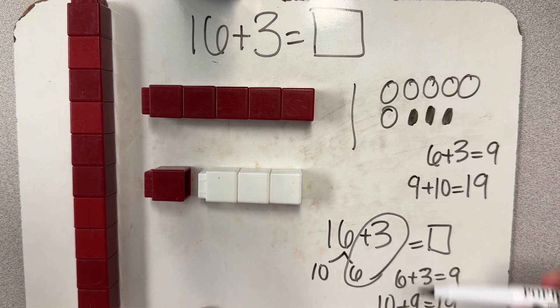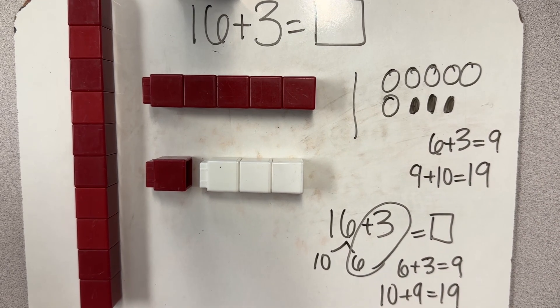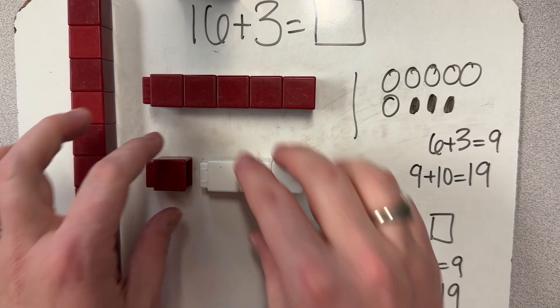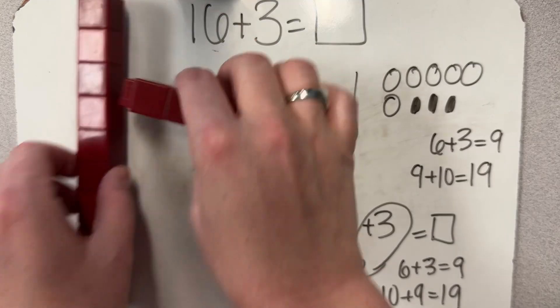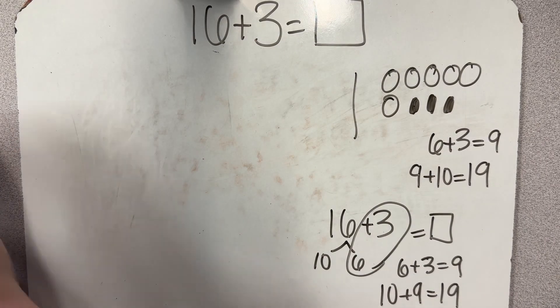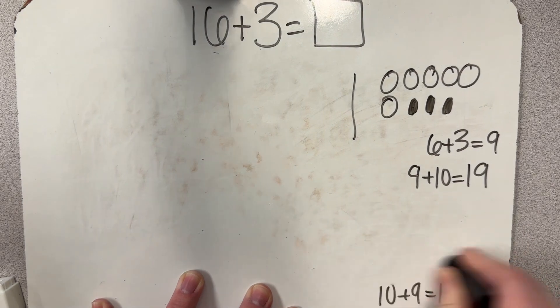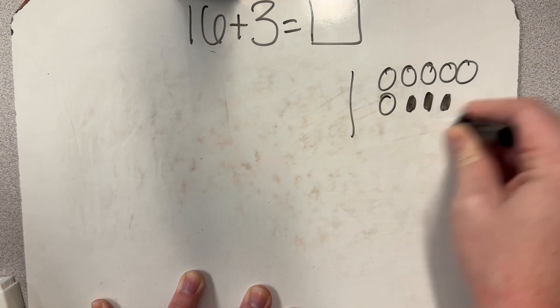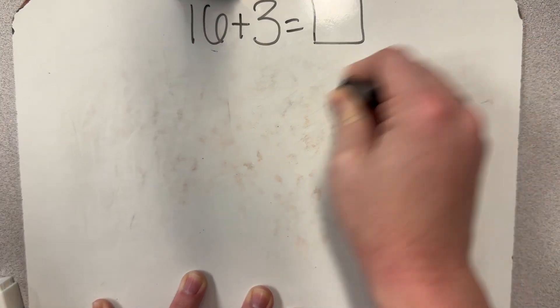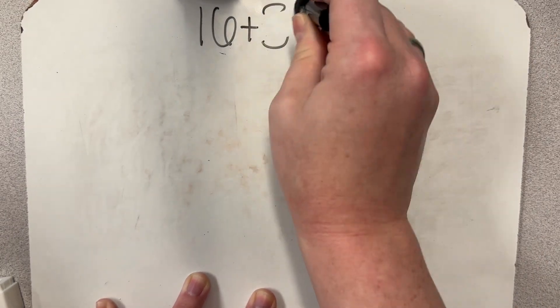So this takes you through the progression of fluency strategies to add within 20. And we will use those throughout our adding to become as efficient as we can within 100 using those very same strategies. First, we start with building, then we sketch, and then finally we use just number sentences.